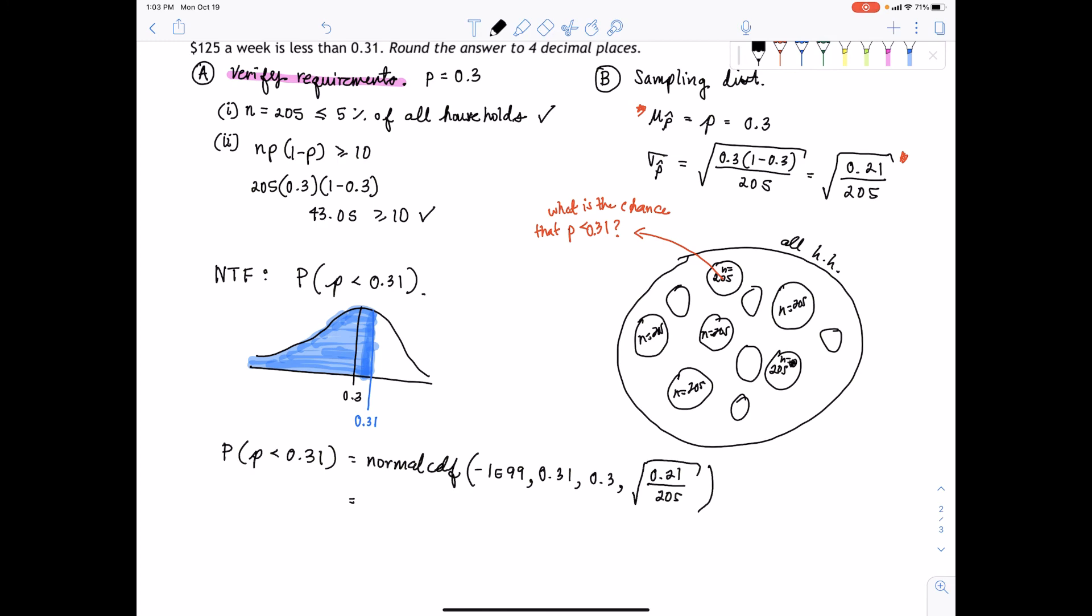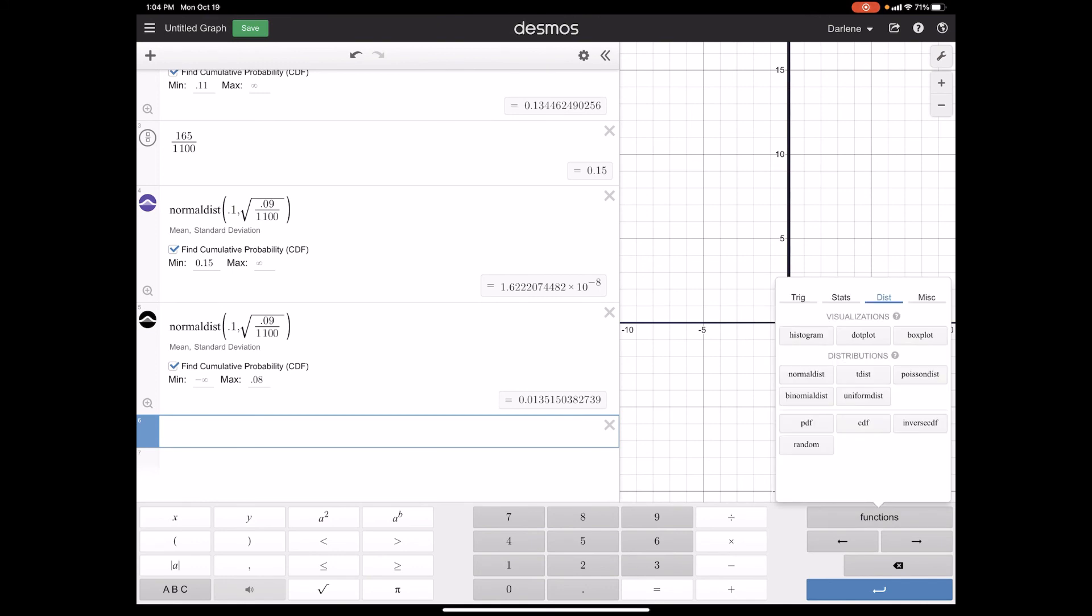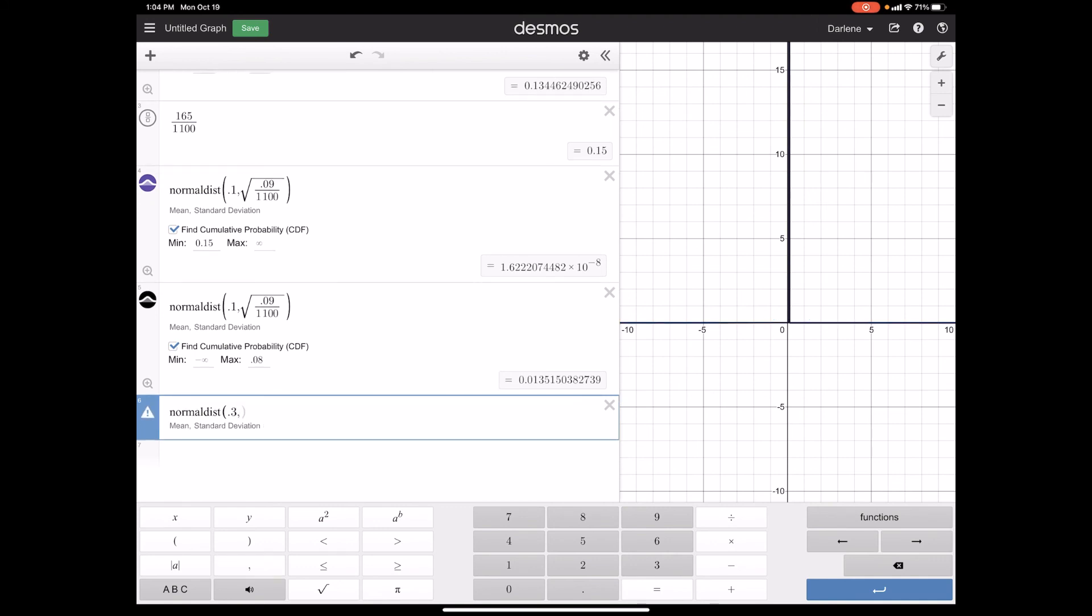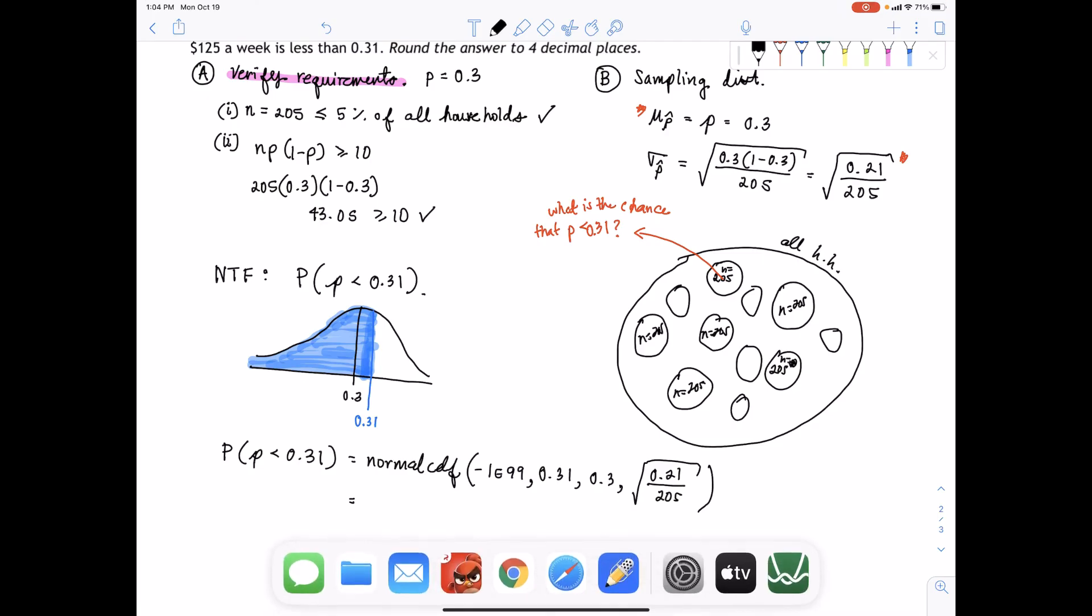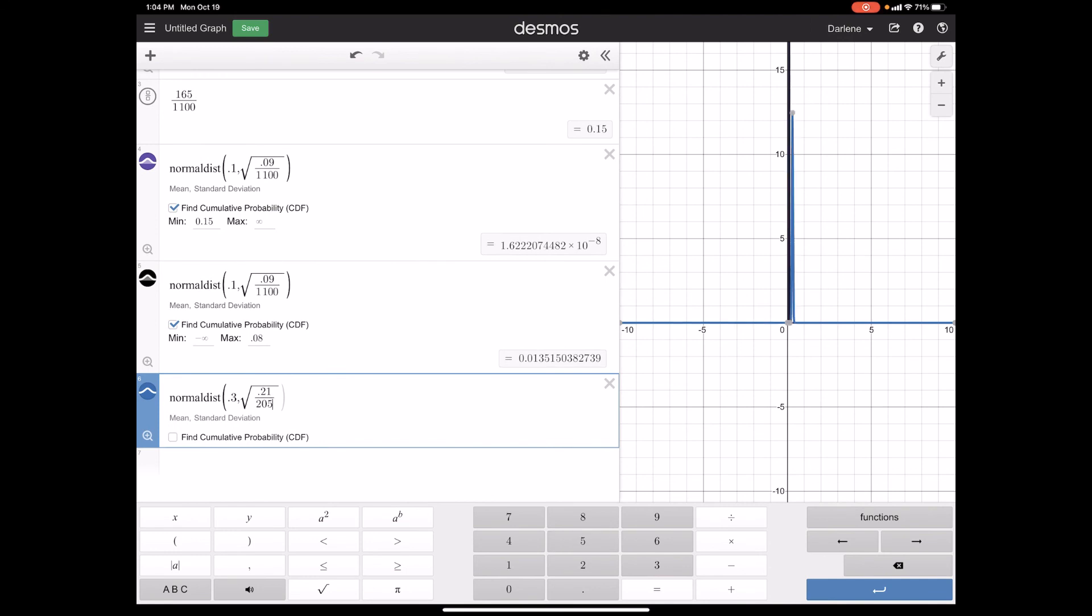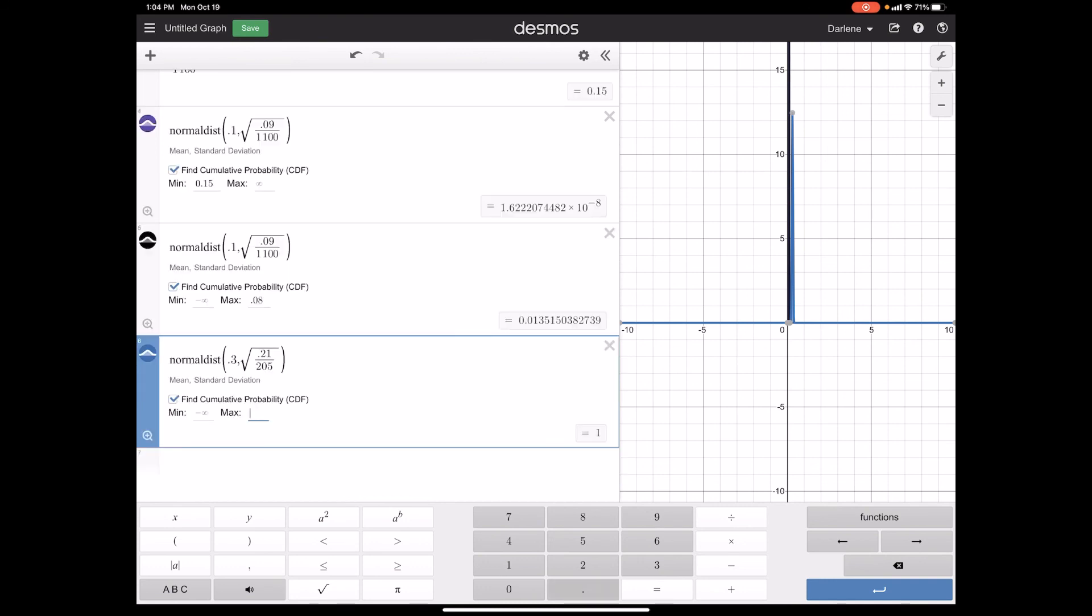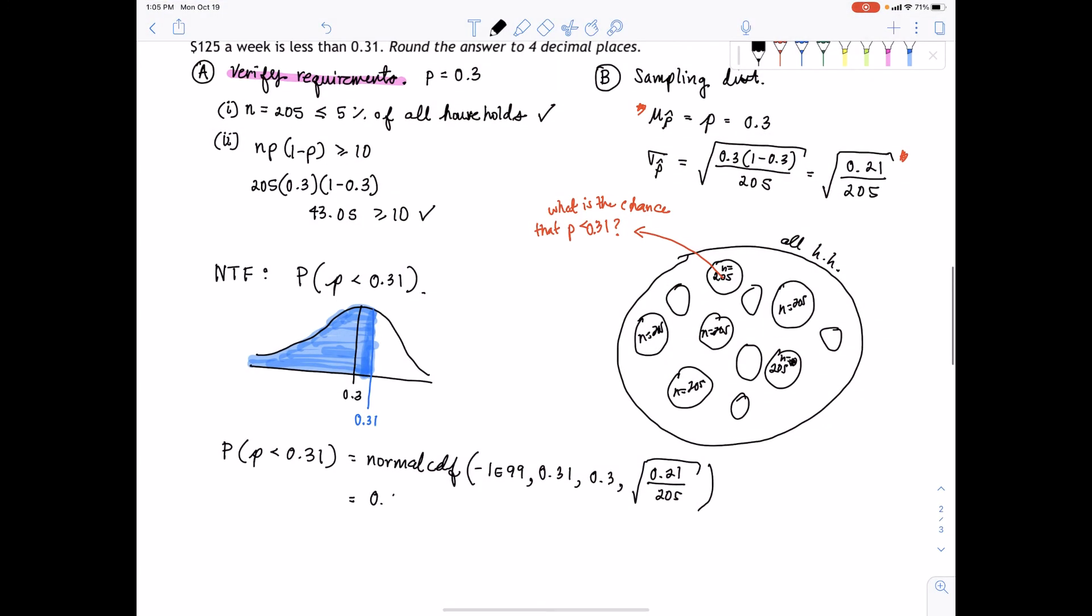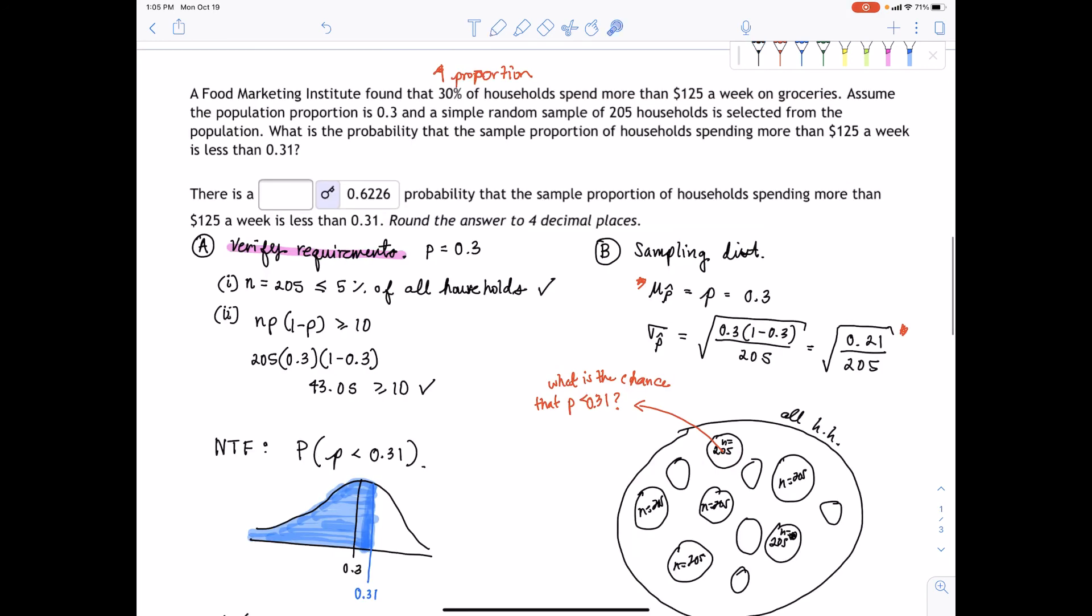If we go to our calculator and put that in, we can use Desmos. Go to functions, normal distribution, and notice it tells us it wants the mean and standard deviation. So the mean was 0.3, that 30%, comma. Then the standard deviation, which is square root of 0.21 over 205. I want to find the cumulative, CDF, so select that box. The minimum we could leave at negative infinity since we're looking for the left tail, and then give the right endpoint as 0.31. We get 0.6226. They want us to round to four decimals, which we did, so that's the answer.